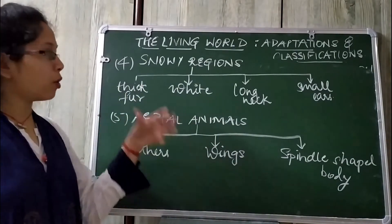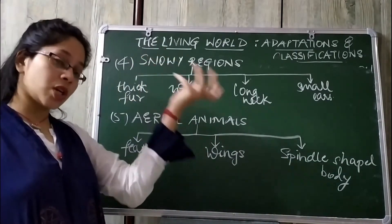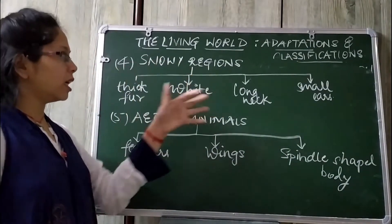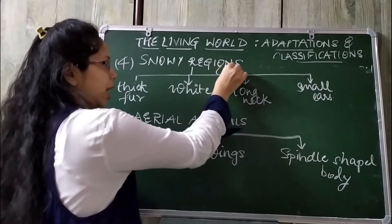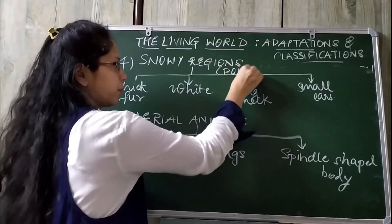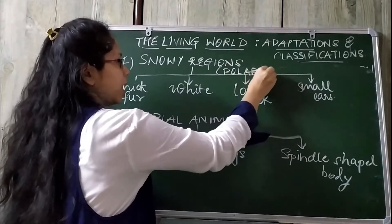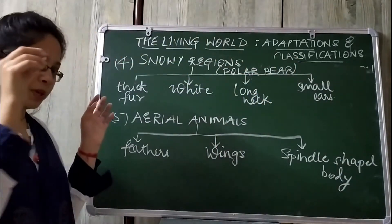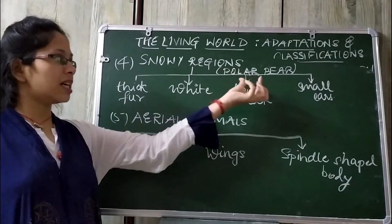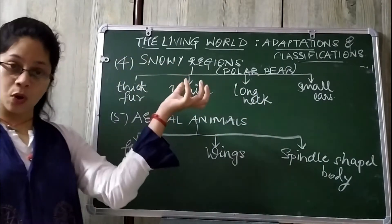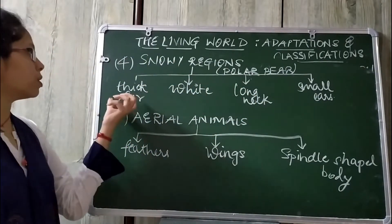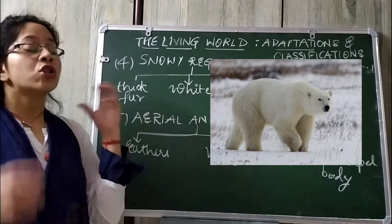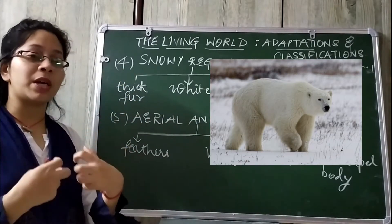Let's go to the adaptations shown by animals which live in snowy regions. We can take the example of a polar bear, which most of us know. These polar bears live in ice cold snowy regions and they have very thick fur so that their body remains warm.